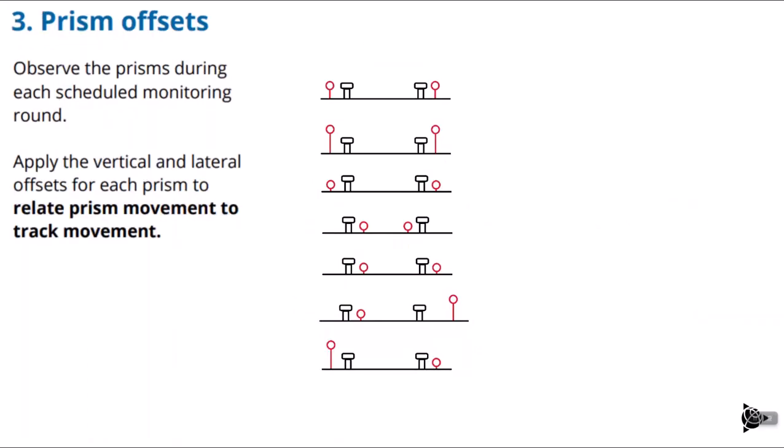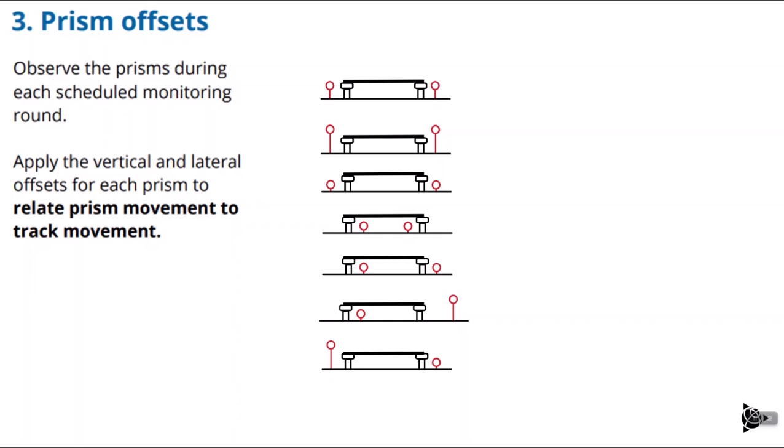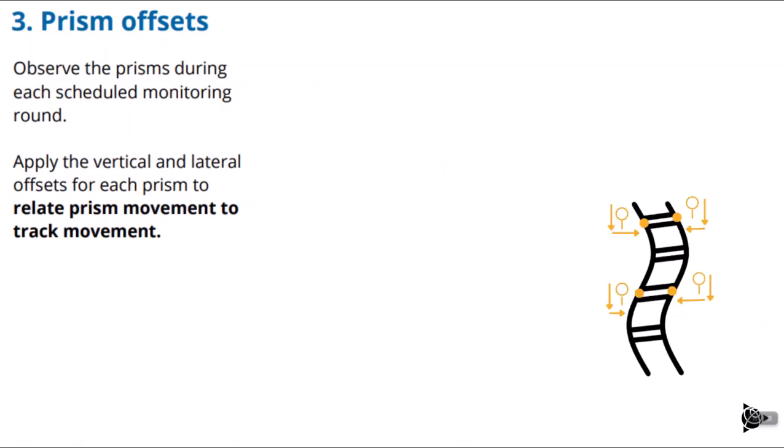Once we start observing and measuring to the prisms during a monitoring round, we need to relate any detected prism movement to the track itself, because we want to monitor how the track is moving, not how the prisms are moving. Relying solely on prism movement could give us an incorrect understanding of what's happening to the actual track. For example, the prism can be higher or lower than the rail, further out or further in — and sometimes it could indicate the track is tilted when it is not. We need to apply vertical and lateral offsets to each monitoring observation.